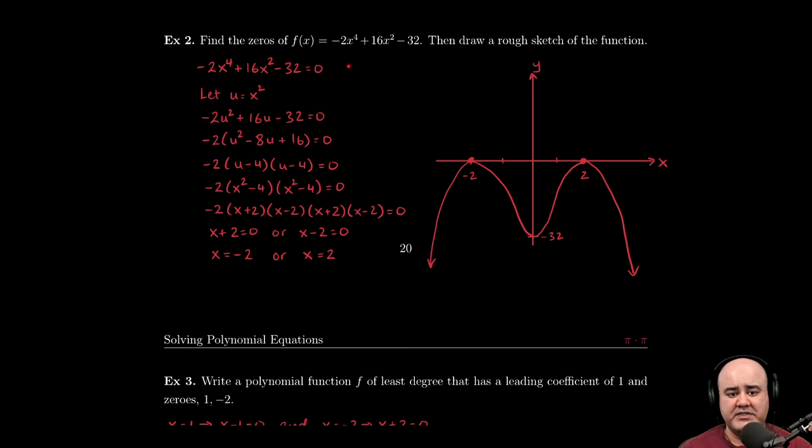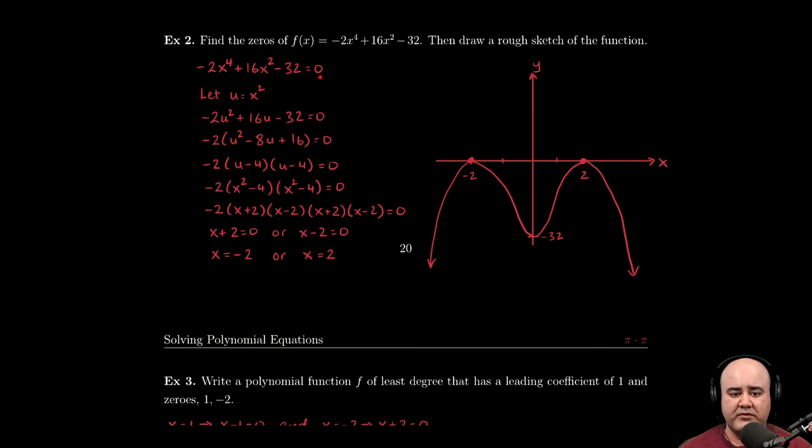Now had this 32 been on the other side, we would first have to subtract it over, make sure that the equation is set equal to zero before moving on.